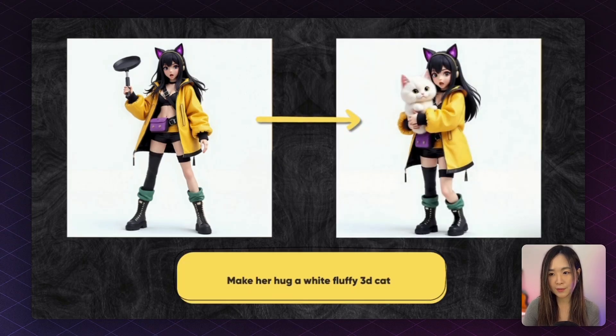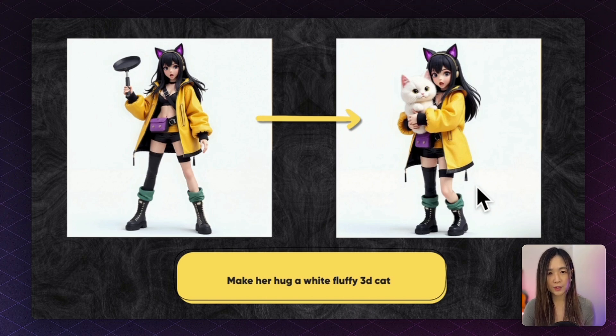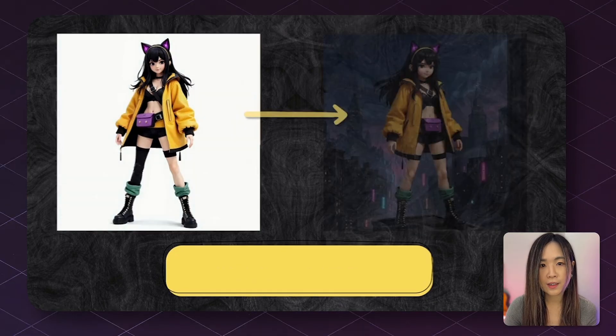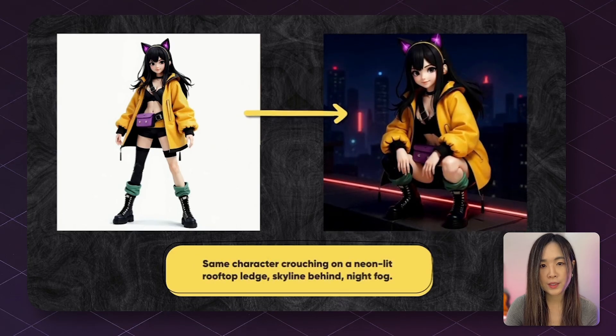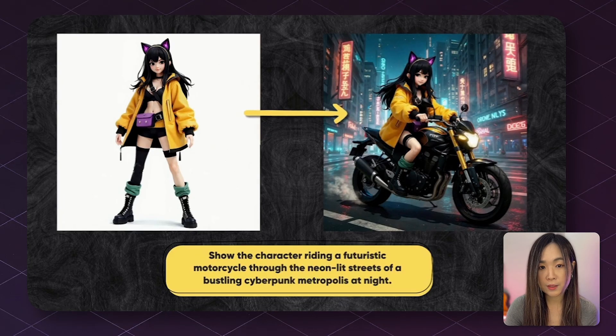I put in a character with a very complicated, detailed outfit and accessories, and asked Context to make her hug a white fluffy cat. Her height shifted slightly, but her outfit, accessories, and facial features are precisely preserved. You can ask the same character to interact with objects, strike different poses, or move into completely different scenes, and they stay incredibly consistent.